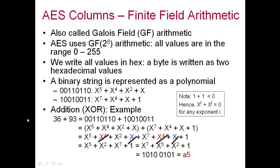For example, adding hexadecimal bytes 36 and 93: 3 in binary is 0011 and 6 is 0110, giving 0011 0110. And 9 is 1001 and 3 is 0011, giving 1001 0011. We write these as polynomials and perform XOR addition.